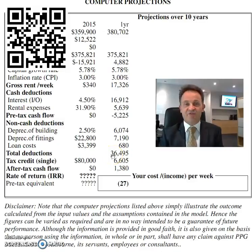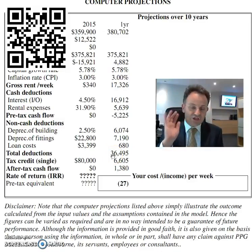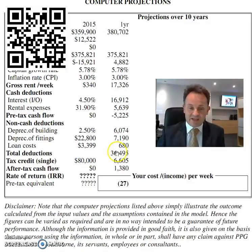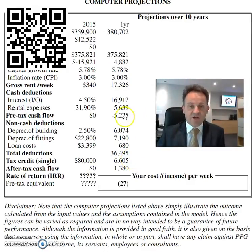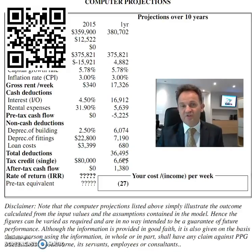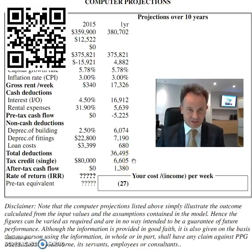So the total deductions on this property should be around $36,495. Now this is just an example — if you're on an income of $80,000 and you claim that amount, you should be able to get back $6,605 from the tax man. We have a shortfall of $5,225 up here, and then we get back $6,605.